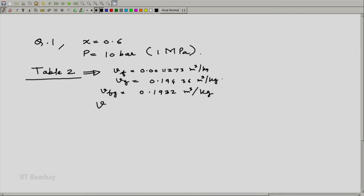I will have a simple formula V = VF + x times VFG. I will just write the value, x = 0.6. VF = 0.0012723 + 0.6 × 0.1932, this is equal to 0.117066 m³/kg. This is the value of V that we got.